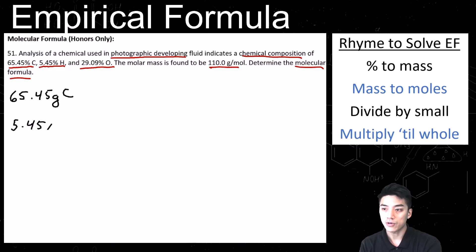But first, let's carry out the first part of our rhyme, percent to mass. So change all the percent symbols to grams. So that's what I'm doing there for carbon, hydrogen, and oxygen. Draw a line for each of these three elements.